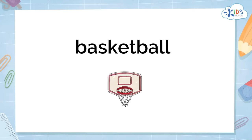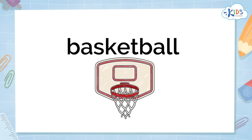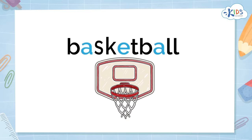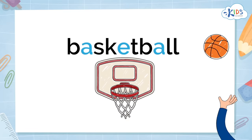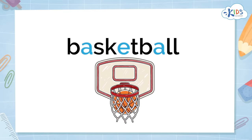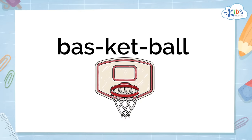We can use this strategy to decode longer words as well. Let's try this one. You can see that this word has three vowels, each separated by consonants, so it has three closed syllables: bass, ket, and ball. This means that the vowel sounds are probably short. Bass, ket, ball.